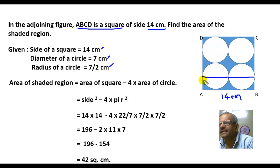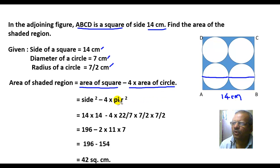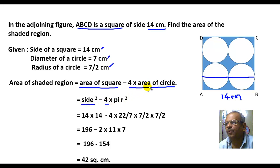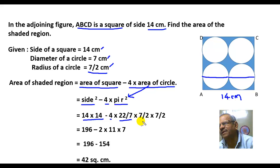The area of the shaded region equals the area of the square minus 4 times the area of one circle, because there are four circles of the same area. Area of the square is side squared, minus 4 into pi r squared. Side is 14 centimeters, so side squared is 14 into 14, minus 4 times 22 by 7, with radius 7 by 2.